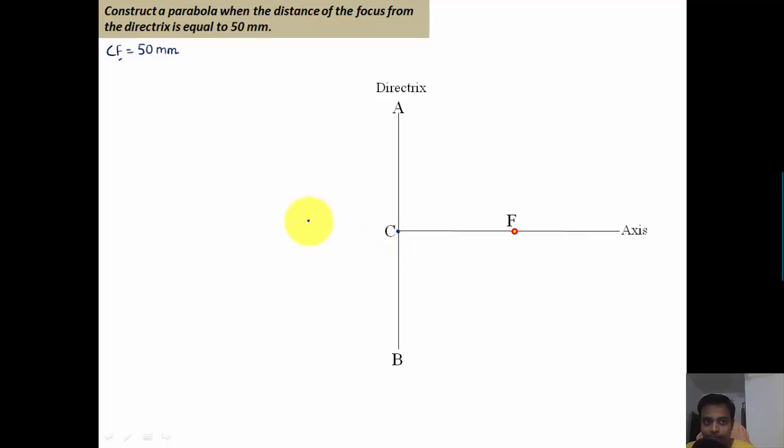Next, we need to locate the exact location of the vertex. When speaking of a parabola, you always need to remember the value of eccentricity is equal to 1. The formula for eccentricity is distance of the point from focus divided by the distance of point from the directrix.